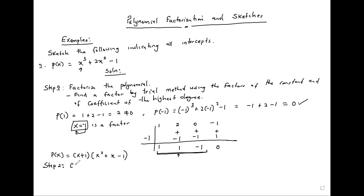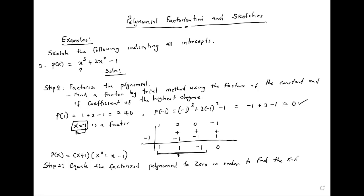Step 2: equate the factorized polynomial to zero in order to find the x-intercepts. So we have P(x) equals zero, implying that (x plus 1)(x squared plus x minus 1) is equal to zero.